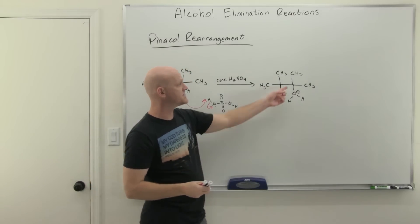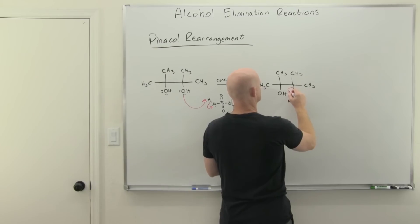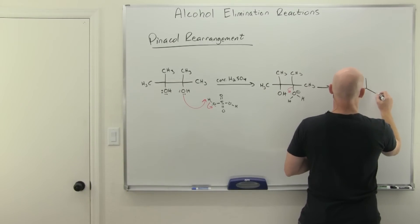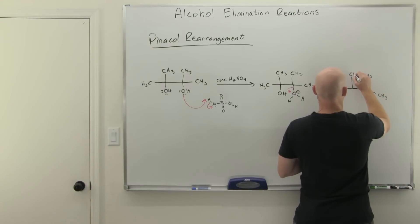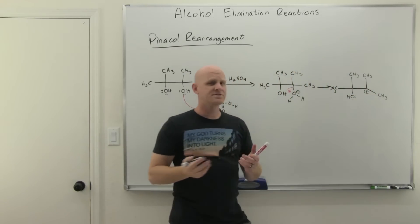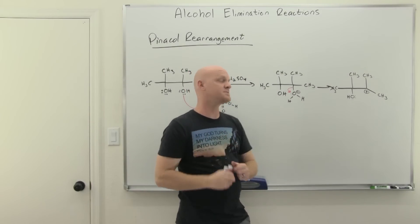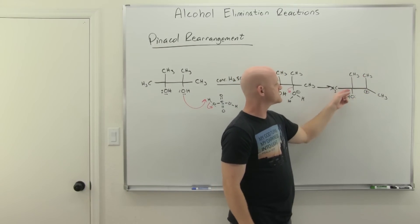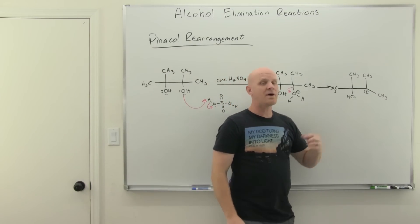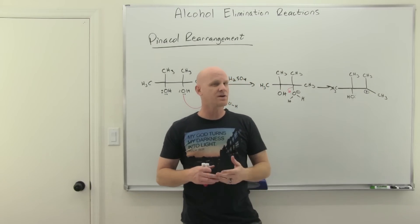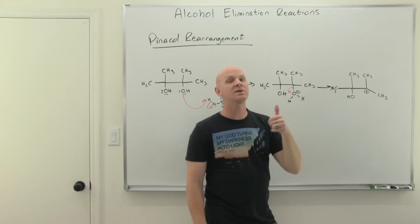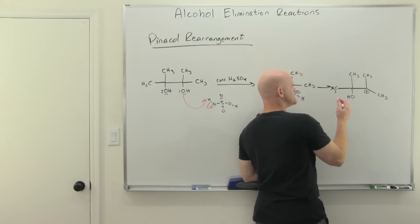That gives you a good leaving group on a tertiary carbon. It leaves and forms a carbocation. We always consider the possibility of rearrangements with carbocations. This one is tertiary; the adjacent carbons are primary or also tertiary — so you might not expect rearrangement. But don't forget: rearrangements can also be about resonance stabilization, not just substitution level. Having the carbocation next to the oxygen with lone pairs means we'd get resonance stabilization — so there definitely is a rearrangement.